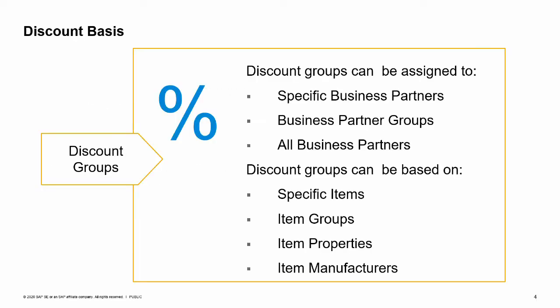Discount groups are the most flexible type of pricing. You can assign a discount group to a specific business partner, a business partner group, or even to all business partners. The discounts are defined for specific items or item groups, a combination of item properties, or an item manufacturer. Multiple discounts can be defined within the discount group. For example, within the same discount group you can have a discount on an item group as well as a discount for a specific manufacturer. Discounts can be set at a percentage or be calculated by quantity purchased.